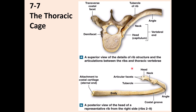Let me explain the rib structure using this image. Starting from here, this is the head of the rib, and this is the articular surface that articulates with the vertebra. Then there is the neck, the tubercle, and the angle. It comes into the body, and the body contains this depression — this is called the costal groove. The content of the costal groove is intercostal blood vessels and nerves.